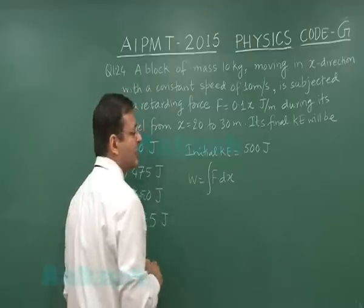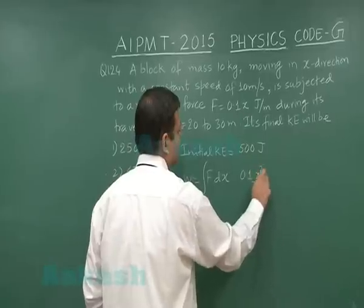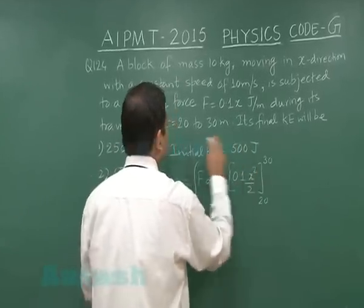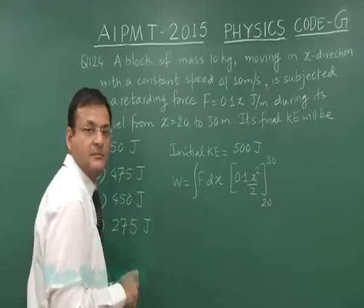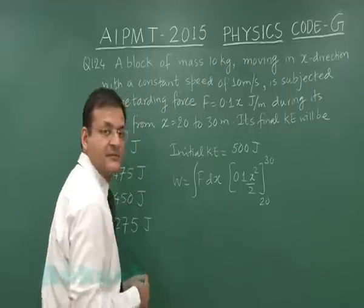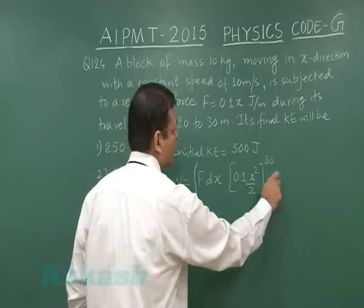So that makes it 0.1 x squared by 2 and it is varying from 20 to 30 because it has been reduced from 20 meter to 30 meter. So if you solve this thing, this will come out to be 900 minus 400, that is 500 into 0.1, that is 50 upon 2. This is equal to 25 joules.